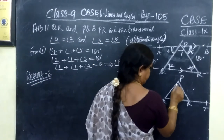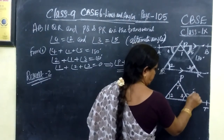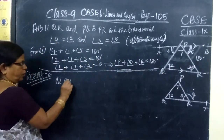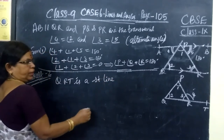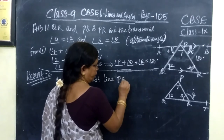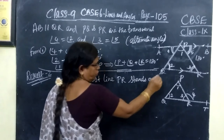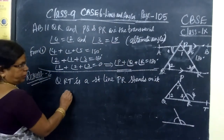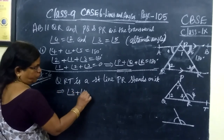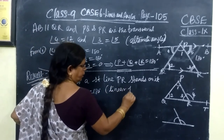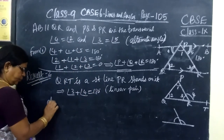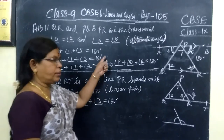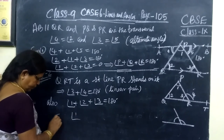For result 2, label the angles: angle P is 1, angle Q is 2, angle R is 3, and the exterior angle at R (angle QRT) is 4. Since QRT is a straight line and ray PR stands on it, the sum of adjacent angles forms a linear pair. Therefore, angle 3 plus angle 4 equals 180 degrees — reason: linear pair. Also, we know angle 1 plus angle 2 plus angle 3 equals 180 degrees from the previous result. By equating these two expressions: